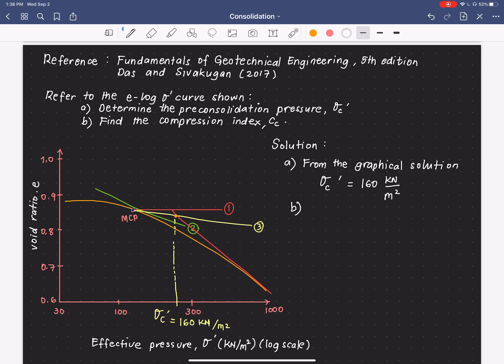So, the first thing we need to do is to consider a straight line, which is mostly found at the virgin consolidation curve. And we consider two points here, and get the slope of this curve, and that will be our Cc.